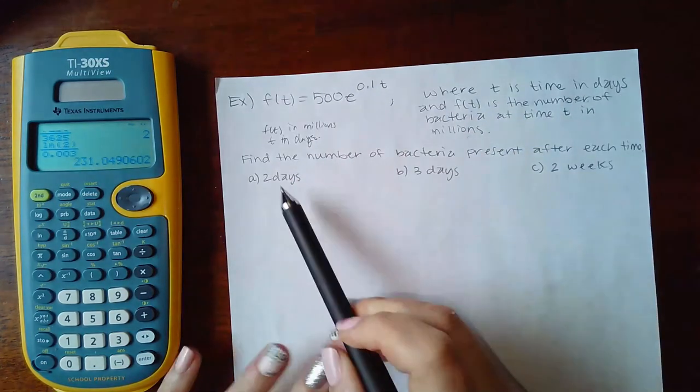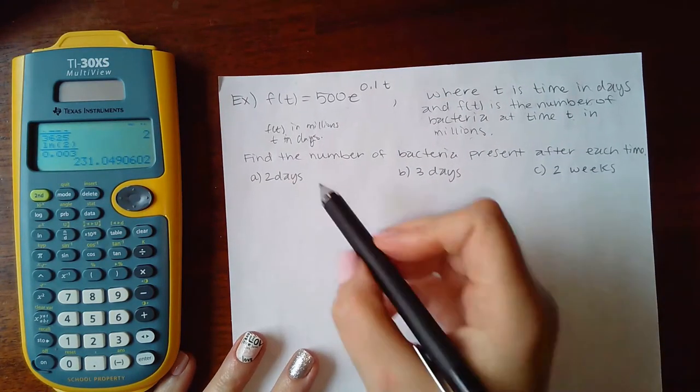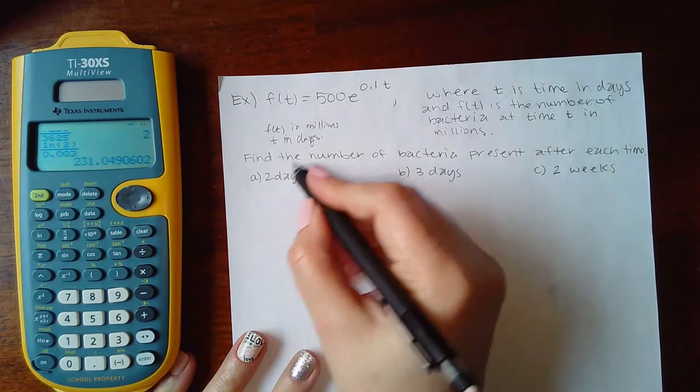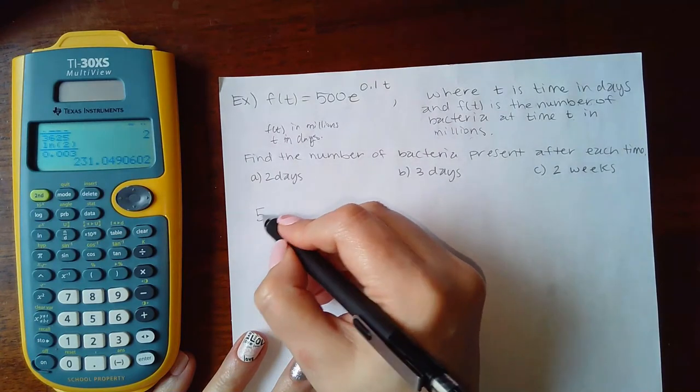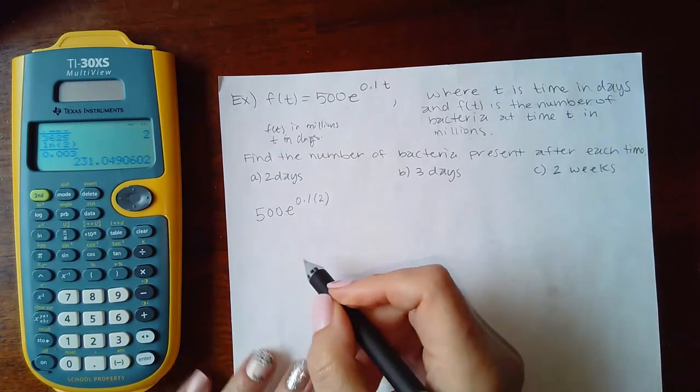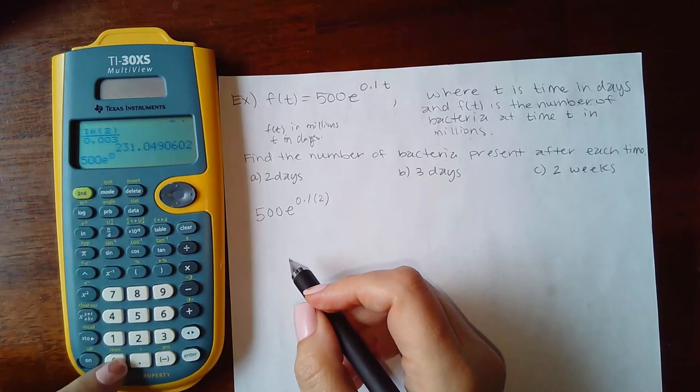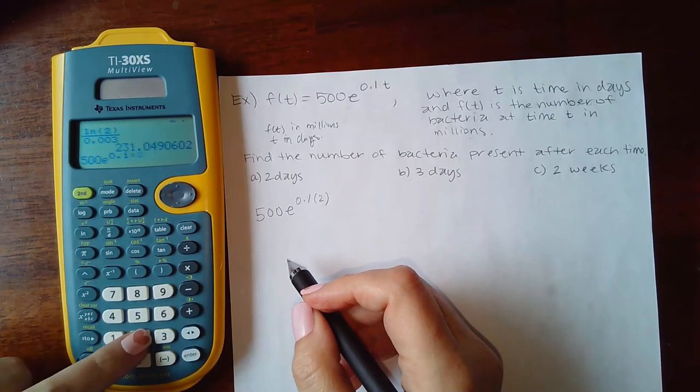So they want me to find the number of bacteria present after each of these three times. So in 2 days, time is in days, so all I'm doing is plugging in a 2 for the time. So let's put that in there, 500 e to the 0.1 times 2.